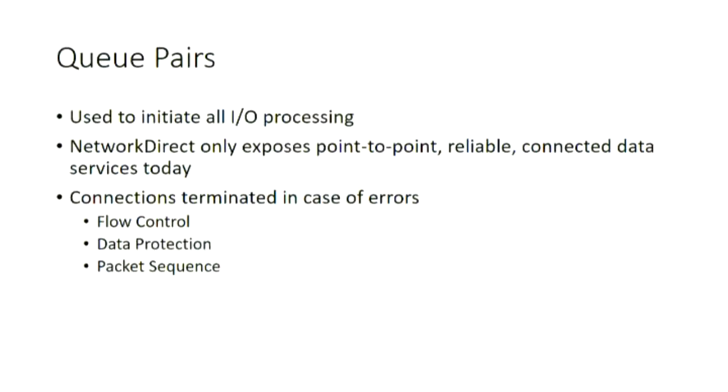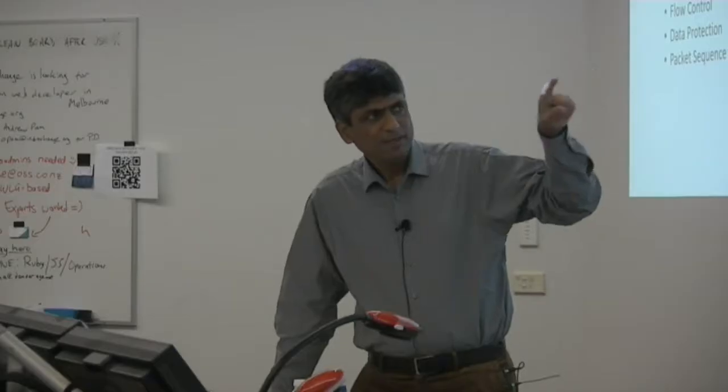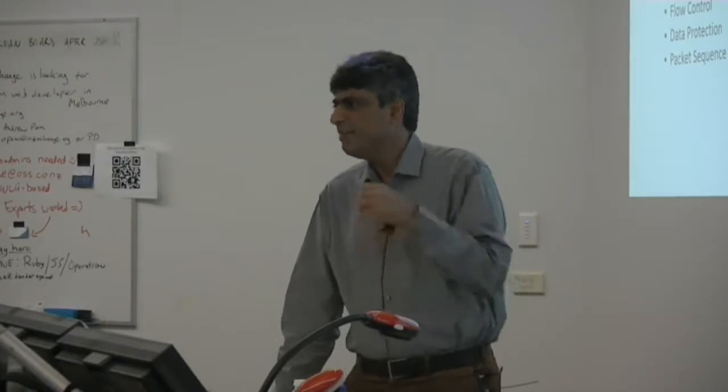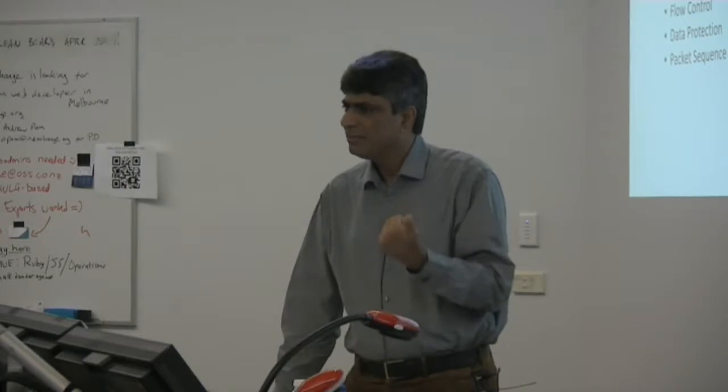All right. So the only point I want to make here is network direct is, how many of you have heard about IB verbs? Okay. IB verbs. So if you look at the Open Fabric Alliance, they have put out a standard in terms of how RDMA is to be done. You will see two different standards, one for everything but Windows, and one for Windows. Right? And this is the Windows standard. Network direct is the standard of how we do RDMA on Windows side. Network direct actually has a much simpler RDMA model than what is available on the Linux side in terms of IB verbs. Network direct only allows point-to-point, reliable, connected data services. So a lot of the verbs that you see in IB verbs have no equivalent operation in the Windows land.